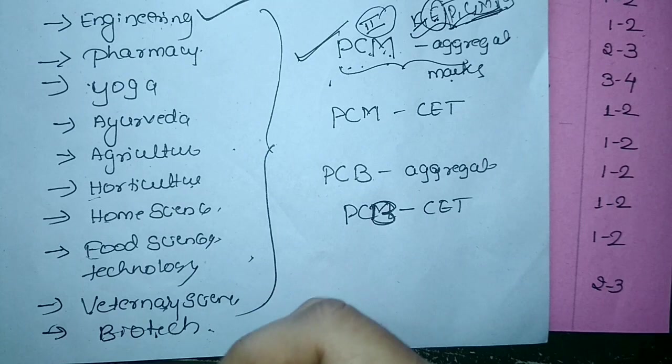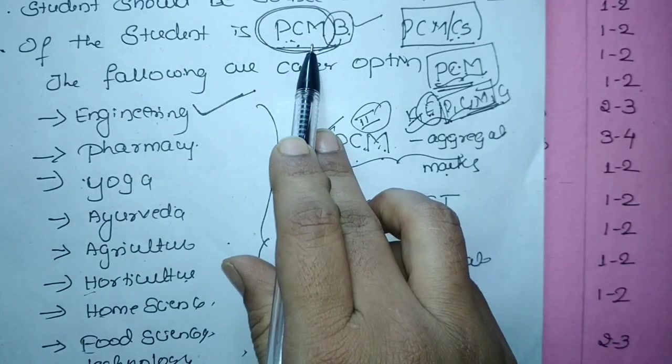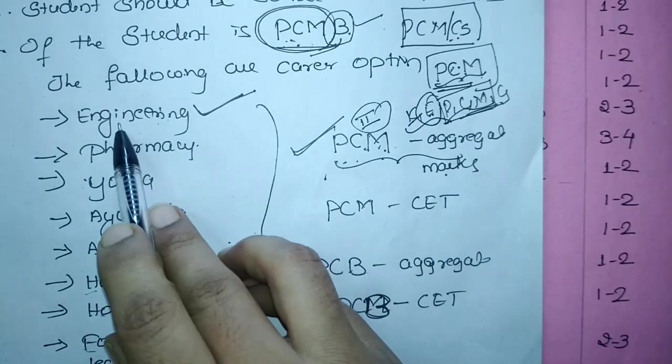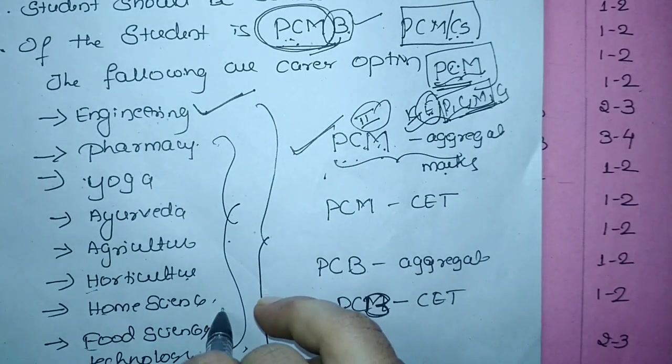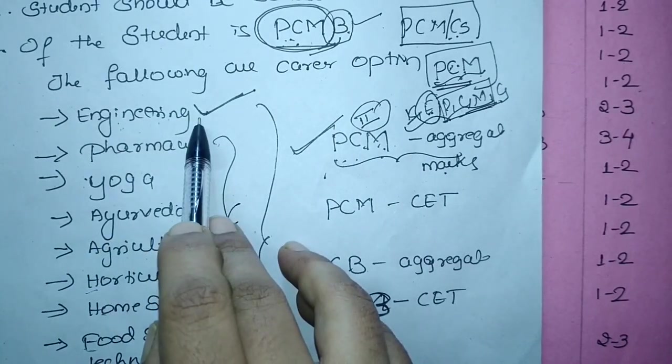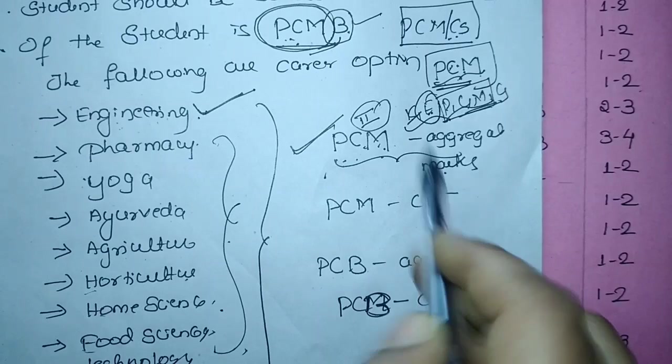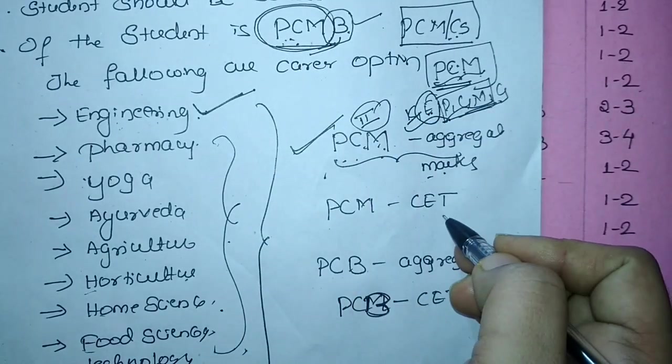Next for the PCB students. So the students who have taken PCMB they can opt engineering, they can opt the remaining subject as well. So for example, if they want to join engineering courses, the same rule is applied here. They are going to consider PCM marks and even PCM CET.